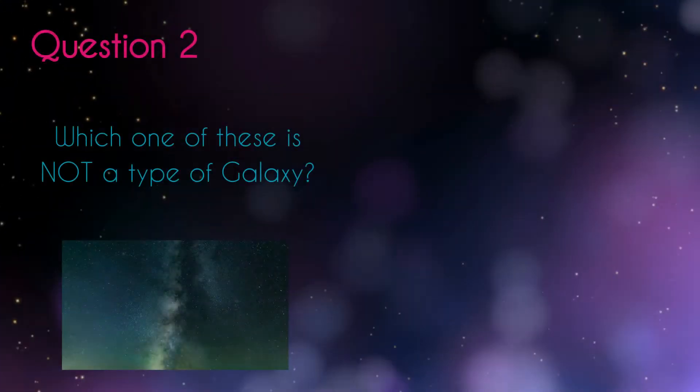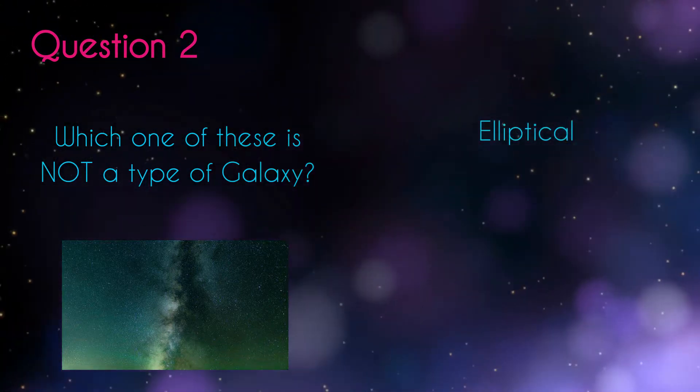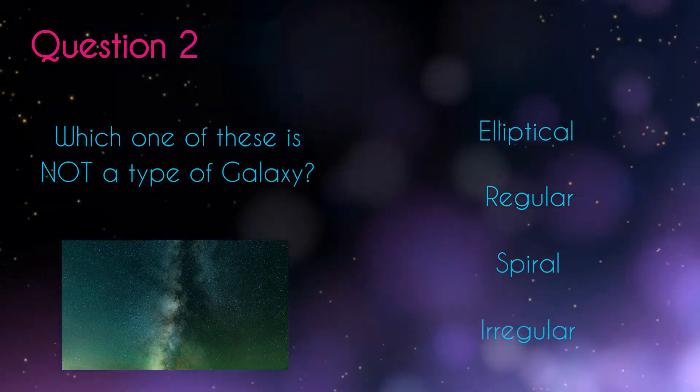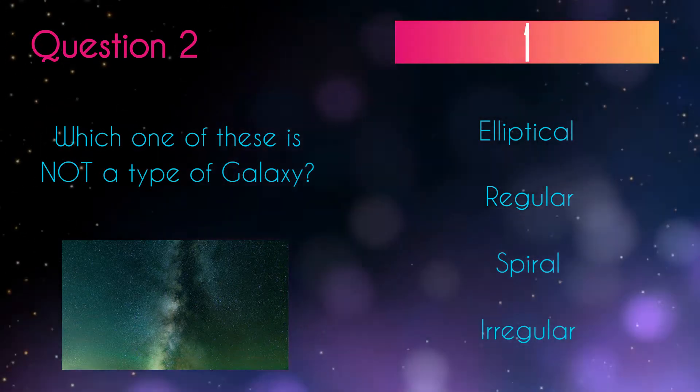Question two. Which one of these is not a type of galaxy? Elliptical, regular, spiral, irregular. Regular.